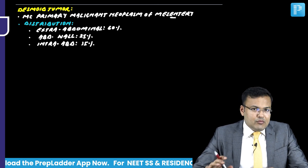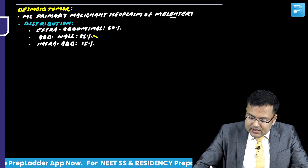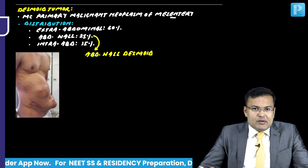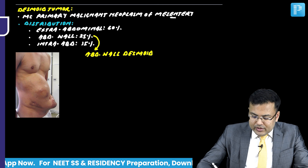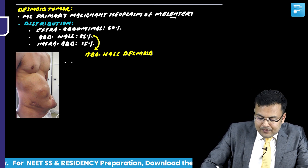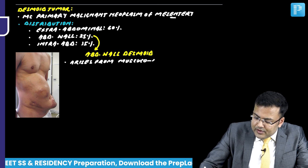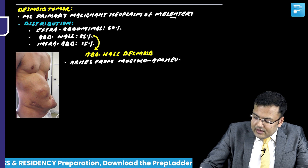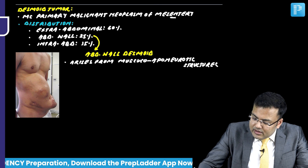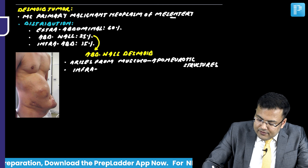In this chapter, we are mainly discussing abdominal wall desmoid. Abdominal wall desmoid arises from musculo-aponeurotic structures. The most common location, as you can see in this image, is infra-umbilical.